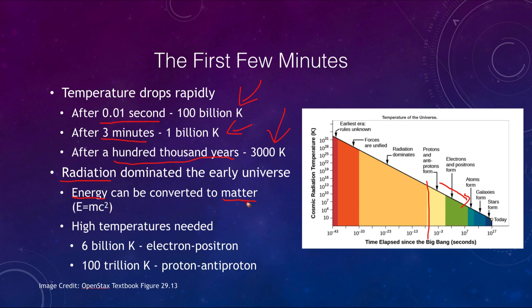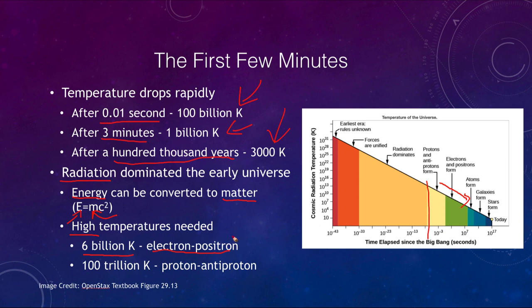We also know that energy can be converted to matter by Einstein's equation E = mc². We usually think of it one direction — a small amount of mass making a large amount of energy — but it works the other way too: large amounts of energy can make small amounts of mass. At a temperature of 6 billion Kelvin you could create electron-positron pairs, and at 100 trillion Kelvin you could produce proton-antiproton pairs.